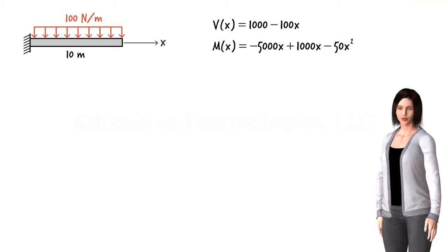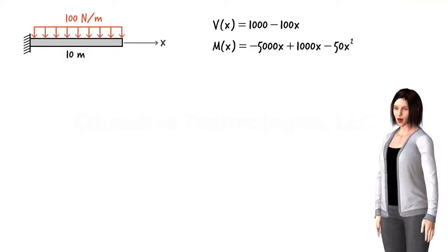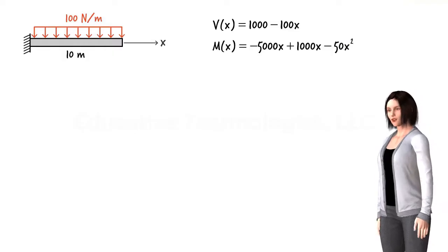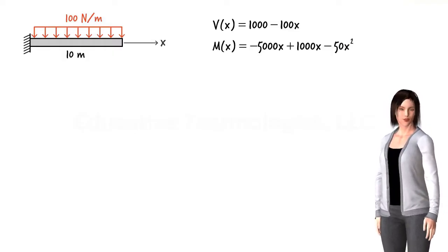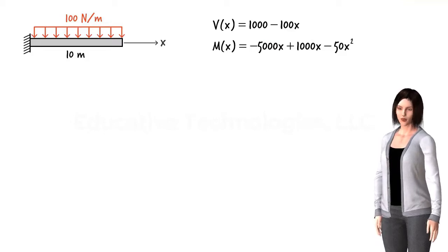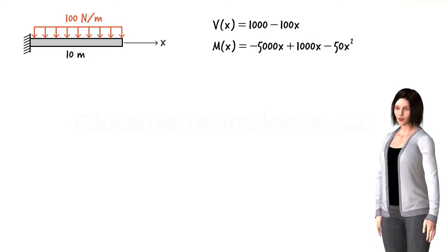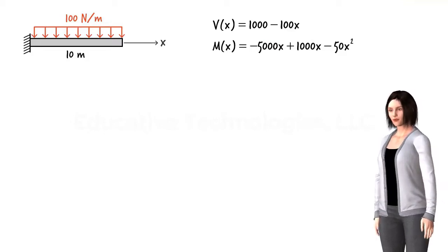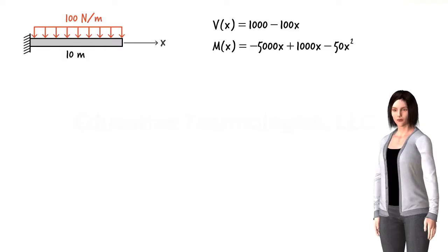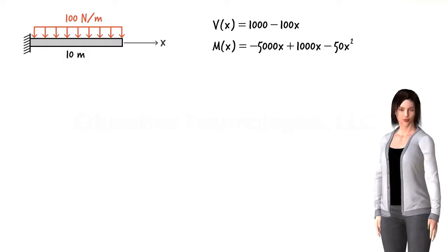In most cases, it may not be possible to write only one equation for shear or moment for the entire beam. Rather, it would be necessary to write multiple equations, one for each beam segment. This happens when the beam is subjected to one or more concentrated loads.